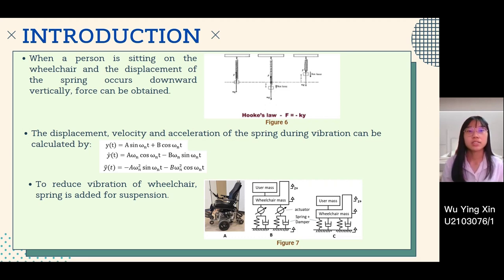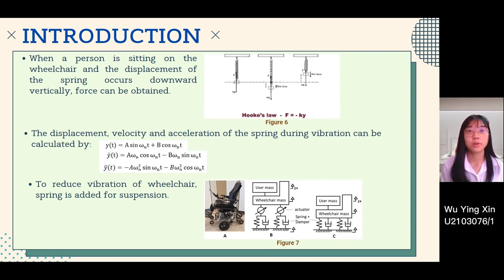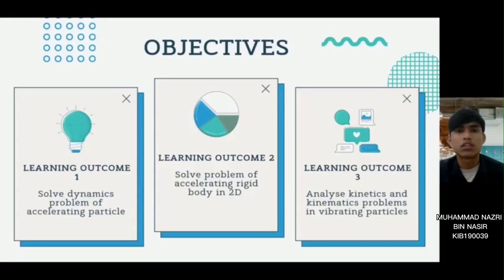The displacement, velocity, and acceleration of the spring during vibration can be calculated through the formulas shown in the slide. In order to reduce the vibration of a wheelchair, a spring is added for suspension. This is most commonly used in a powered wheelchair, as shown in figure 7, as the spring can be compressed to absorb impact.